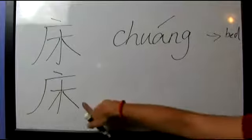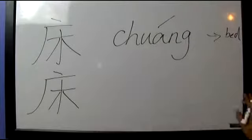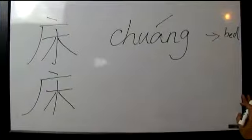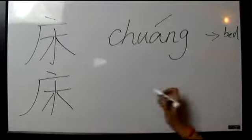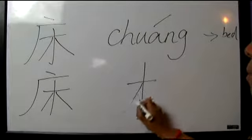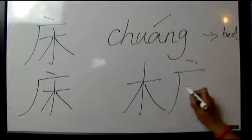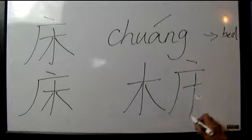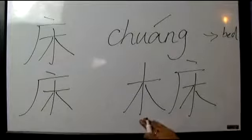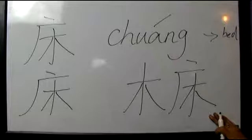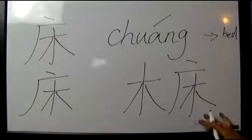Chuang is simple — a noun. You can have wood bed: it's mu chuang. So mu chuang means a bed made of wood. Mu chuang.